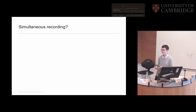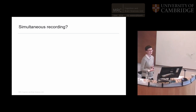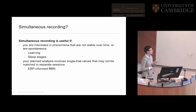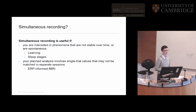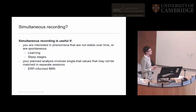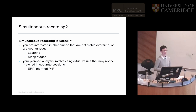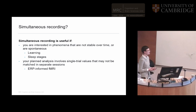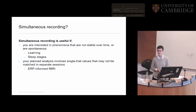You might wonder why we wouldn't always do simultaneous EEG-fMRI recording, since you'd be recording brain activity at the same time and all activity is matched perfectly in both. You might want to do simultaneous recording if you're interested in phenomena that aren't particularly stable over time, or for spontaneous activities like sleep — where you can use the EEG to identify when someone is in a particular sleep stage and then look at the fMRI in response to that. Also, if you're planning to use single-trial values, you might want to record simultaneously because activity at each trial wouldn't necessarily be matched across separate sessions.